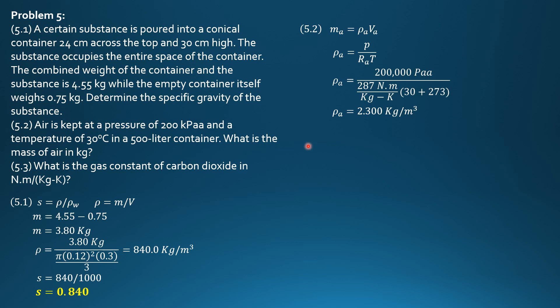Therefore, mass of air is 2.300 times 0.5 cubic meter. So the mass of air is 1.15 kg.